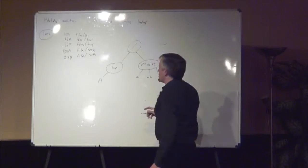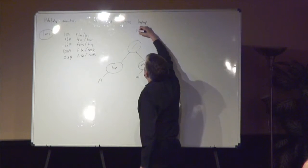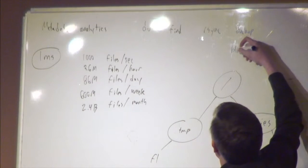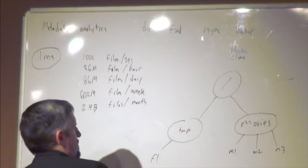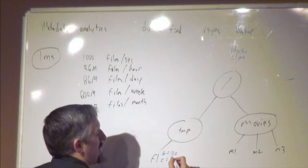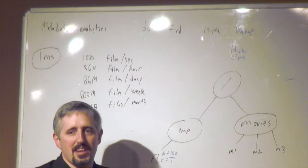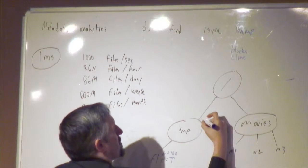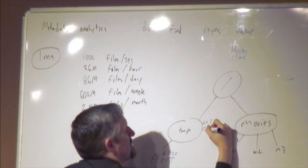These things all have attributes on them. We have a blocks attribute, which is the number of blocks used by the file, and a ctime attribute for when it was last changed. File one might have blocks of 100 and a ctime of today. I'm going to use just today and yesterday because putting times ends up getting confusing in the example. The temp directory itself has a block count of one and a ctime of today.